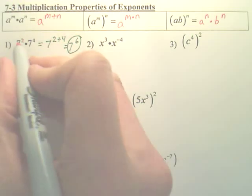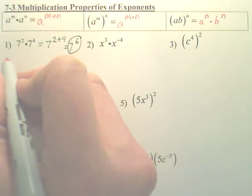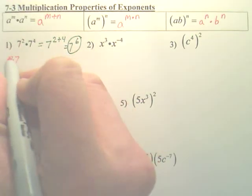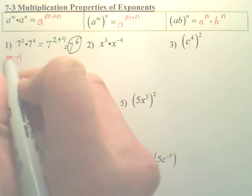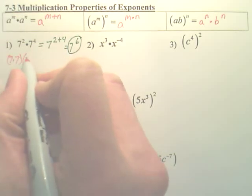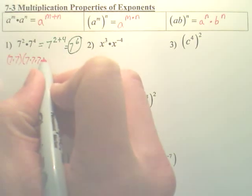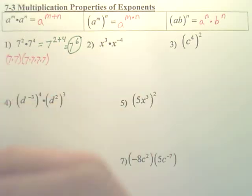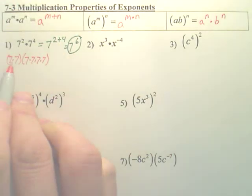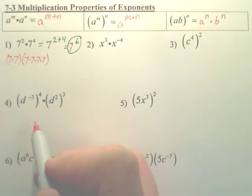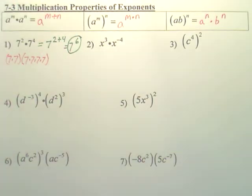Here's why it works. Seven squared is seven times seven — that's your first piece. Seven to the fourth is seven times seven times seven times seven. Do you see six sevens? That's seven to the sixth. It's sometimes good just to know where things come from.